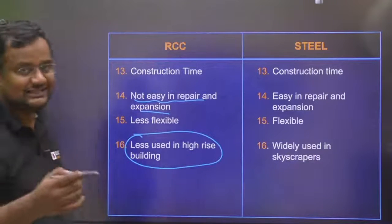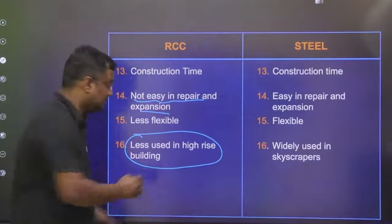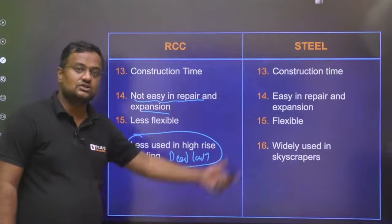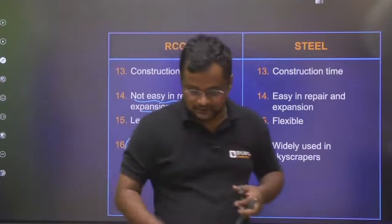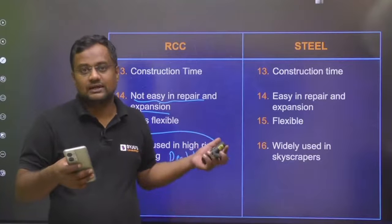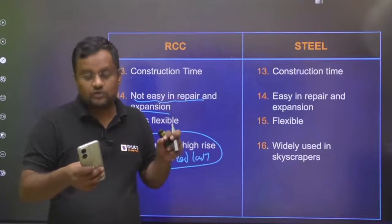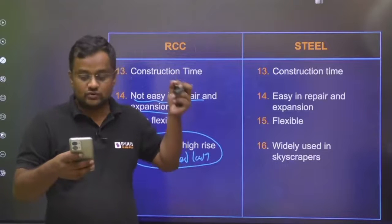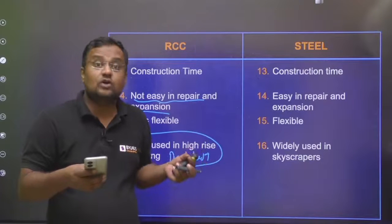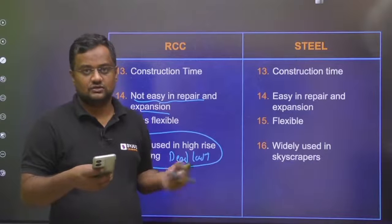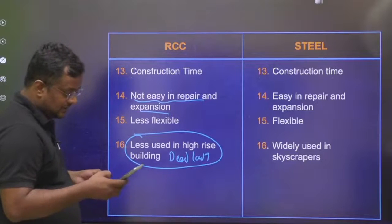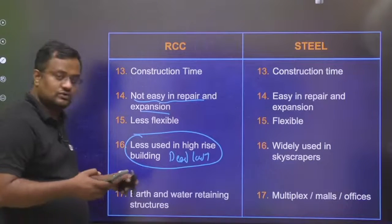RCC is less used in high-rise buildings. In skyscrapers like Burj Khalifa, concrete is lesser used because the dead load of concrete is very high. Steel is used in skyscrapers because dead load is less. In a hundred-story building, the ground floor carries the load of all the above stories — if all those stories are of concrete, there will be a lot of load and a larger cross-sectional area is required. So steel is widely used in high-rise buildings.